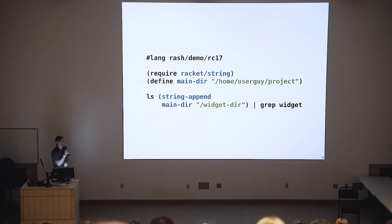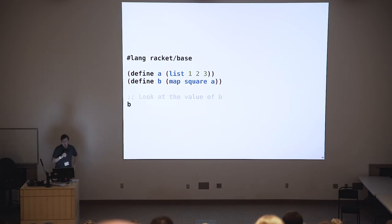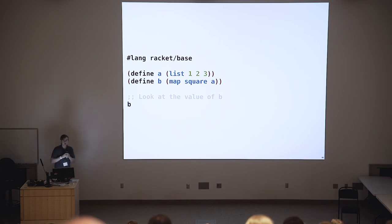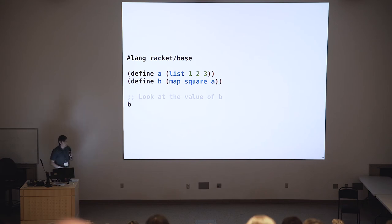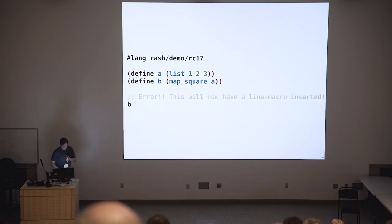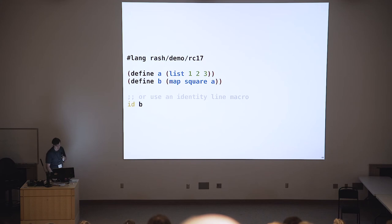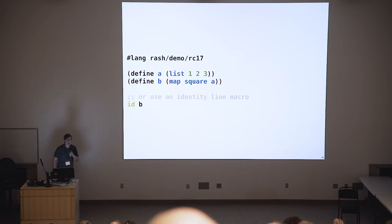Sometimes we want to bypass the line stuff entirely. Any line that starts with an open paren is treated as a normal Racket form instead of the line macro stuff, so you can dump in any normal Racket code. One of the nice things about this is we can actually use it as a drop-in replacement for racket-base most of the time — however many nines of Racket code are going to start with an open paren. The only thing that would break if we change to hash-lang rash is a bare identifier like B, because it will now get a line macro inserted. We can fix that by wrapping it in parentheses or making an identity line macro.